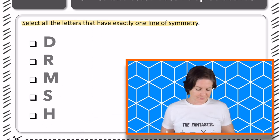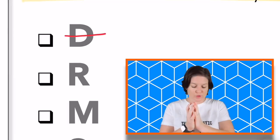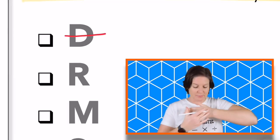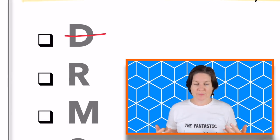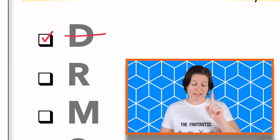So when we're looking at this, we have the letter D, and the letter D has a line of symmetry right here. So if you were to fold those two halves together, like top to bottom, they would have mirrored images. So yes, this one has exactly one line of symmetry.